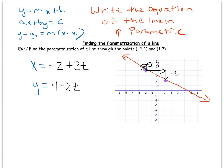To verify, plug in t equals one. You get x equals negative two plus three times one, which is one. And y equals four minus two times one, which is two. So it arrives at the point one, two — which is exactly that other point.